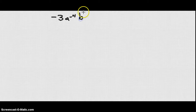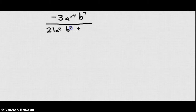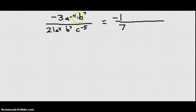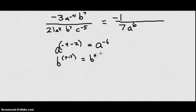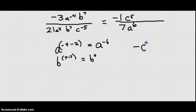Looking at the next example with negative 3a to the negative fourth: dividing both the top and bottom numbers by 3 gives negative 1 over 7 for the numerical part. For the variable a: negative 4 minus 2 gives a to the negative 6, which goes to the bottom as a to the sixth. For b: 7 minus 7 gives b to the zero, which is 1, so we don't include it. For c: c to the negative fifth becomes c to the fifth on top. The final answer is negative c to the fifth over 7a to the sixth.